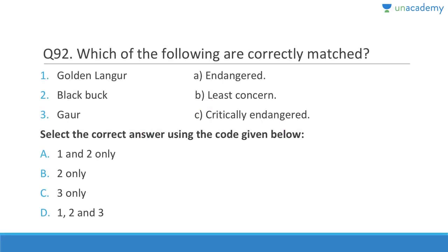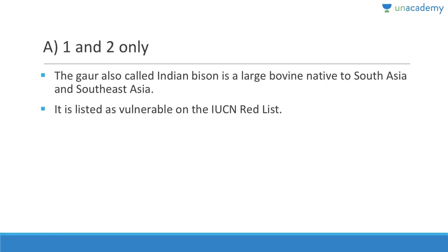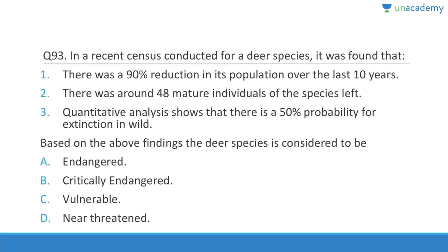Question 92: Which of the following are correctly matched — Golden langur as endangered, blackbuck as least concerned, gaur as critically endangered? Gaur is listed as vulnerable, not critically endangered — that is wrong. Answer is A, 1 and 2 only. Gaur is also called the Indian bison.